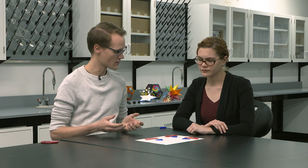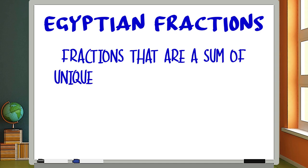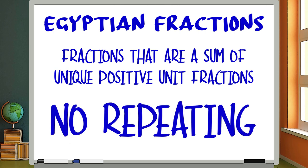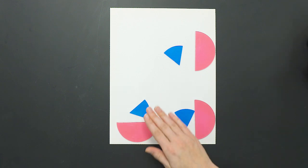So, Egyptian fractions are fractions that are a sum of unique positive unit fractions. Okay. Which means that we aren't allowed to repeat. All right. So, when I was repeating one sixth four times and adding those together, that would not be an Egyptian fraction. That would not fly for the Egyptians, no. Okay. What about how we have it here, which is one half plus one sixth? That works out just fine.